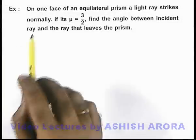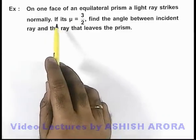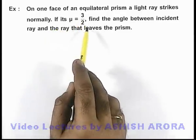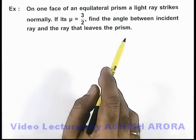In this example, we are given that on one face of an equilateral prism, a light ray strikes normally. And if its refractive index is 3 by 2, we are required to find the angle between the incident ray and the ray that leaves the prism.